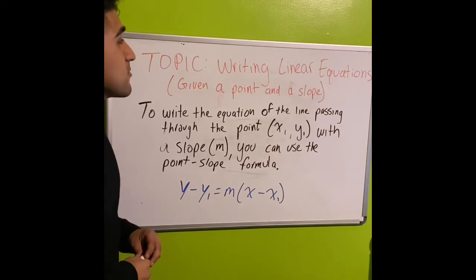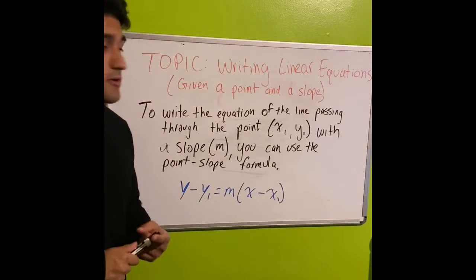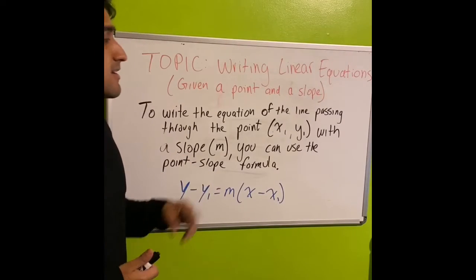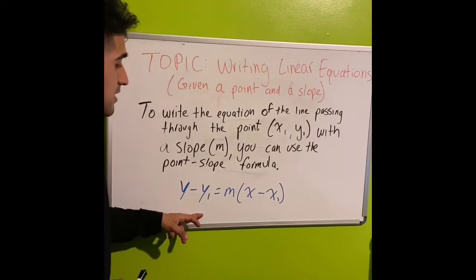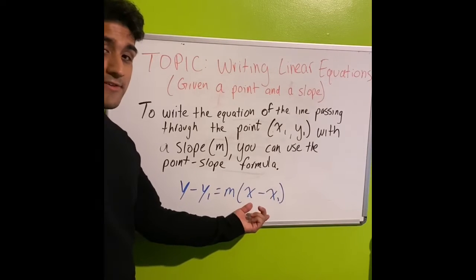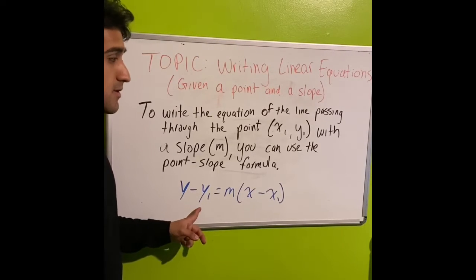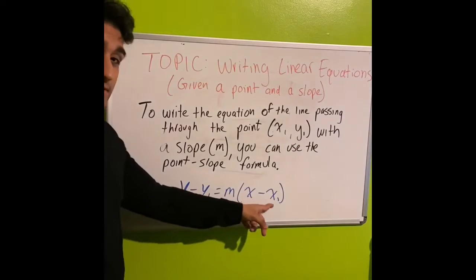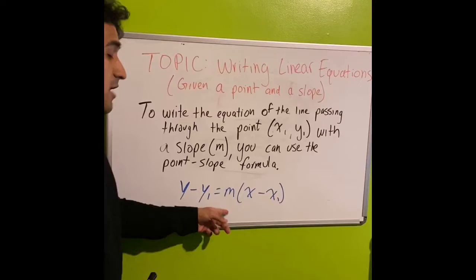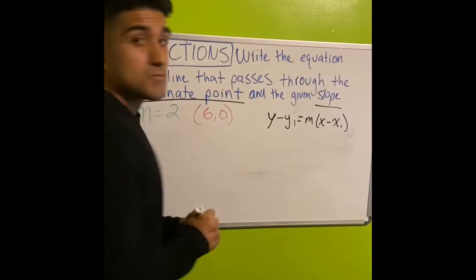Our topic is writing linear equations given a point and a slope. To write the equation of a line passing through a coordinate point with a given slope, we're going to use the point-slope formula. That formula is y minus y-sub-1 equals m times the quantity x minus x-sub-1. Here, y-sub-1 is the y-coordinate of your point, x-sub-1 is the x-coordinate, and m is your slope.